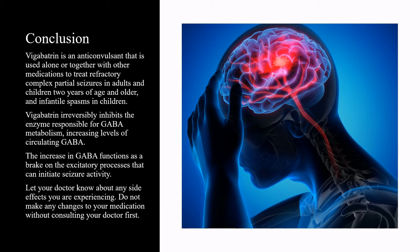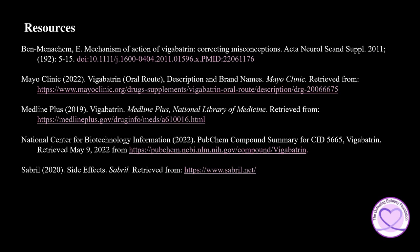In conclusion, Vigabatrin is an anticonvulsant that is used alone or together with other medications to treat refractory complex partial seizures in adults and children 2 years of age and older, and infantile spasms in children. Vigabatrin irreversibly inhibits the enzyme responsible for GABA metabolism, increasing levels of circulating GABA. The increase in GABA functions as a brake on the excitatory processes that can initiate seizure activity. Let your doctor know about any side effects you are experiencing. Do not make any changes to your medication without consulting your doctor first. To learn more about Vigabatrin, please check out the resources used in the presentation today.